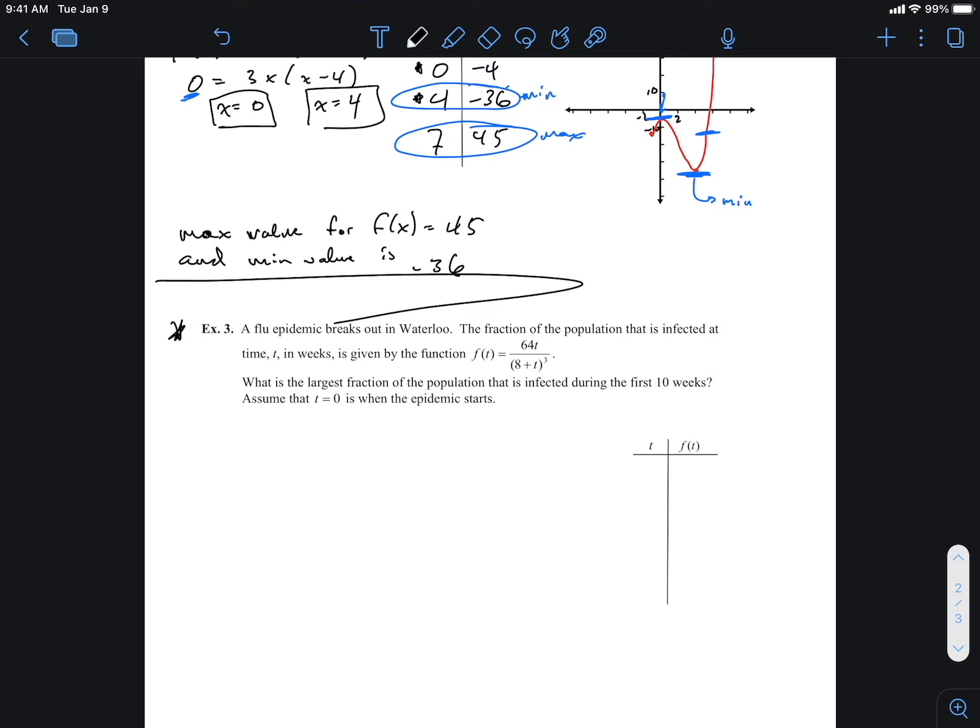So a flu epidemic breaks out in Waterloo, and the fraction of the population that is infected at time t in weeks is given by this function. What is the largest fraction of the population that is infected during the first 10 weeks? So we're going to assume that t equals 0 is when the epidemic starts.